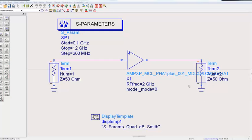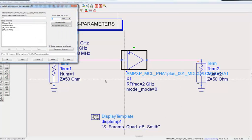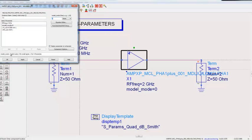The model mode parameter here, we'll go ahead and double click on the model icon. The model mode parameter has two positions: zero for small signal and one for X-parameters.